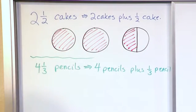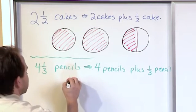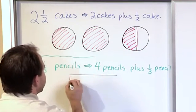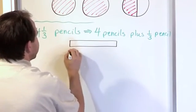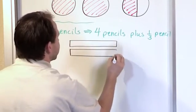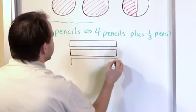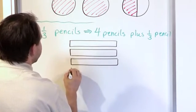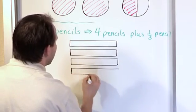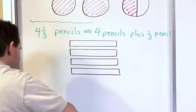So if I wanted to draw this, let's say here is one pencil, here is pencil number two, here is pencil number three, and here is pencil number four. I'm going to end up having a part of that last pencil.